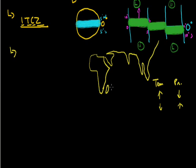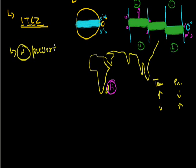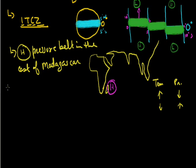Because of the presence of the high pressure belt in the Madagascar or Mauritius region, there is a high pressure area to the east of Madagascar at approximately 20 degrees south over the Indian Ocean. The intensity and position of this high pressure area affects the Indian monsoon. This is our fourth important fact — the high pressure belt to the east of Madagascar.